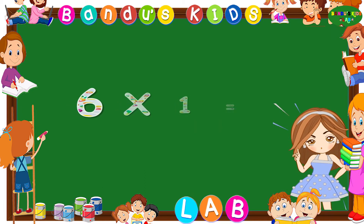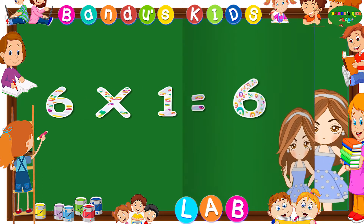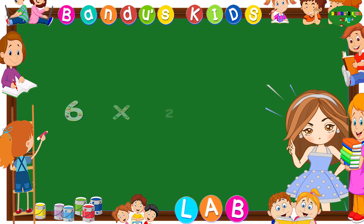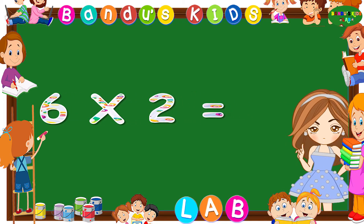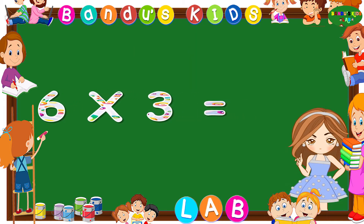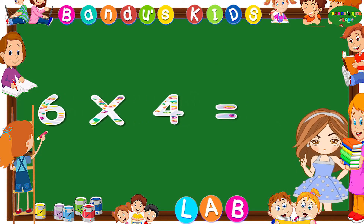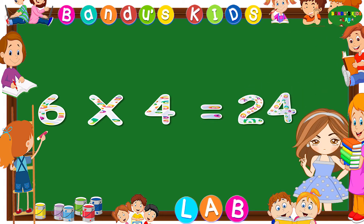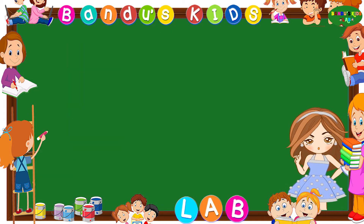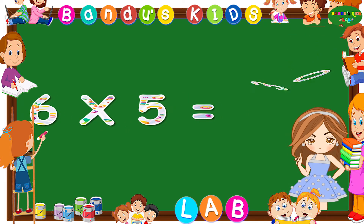Six ones are six. Six twos are twelve. Six threes are eighteen. Six fours are twenty-four. Six fives are thirty.